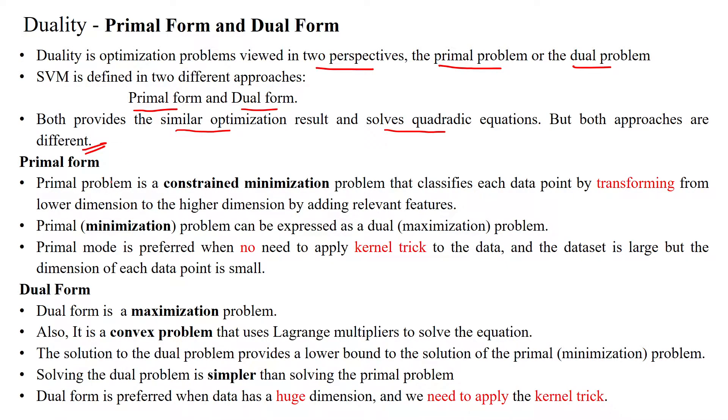The primal form definition is called constrained minimization problem, which classifies data points by transforming from lower dimension into higher dimension by adding relevant features.